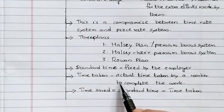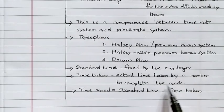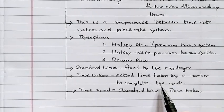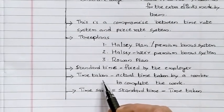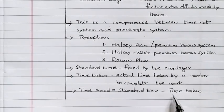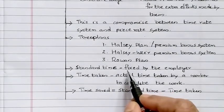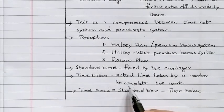Time Taken means the actual time taken by a worker to complete the work — how much time a worker actually spends to finish the job. Time Saved means Standard Time minus Time Taken. If a worker completes the job before the standard time, the difference is the time saved.